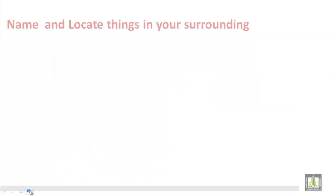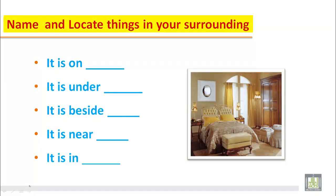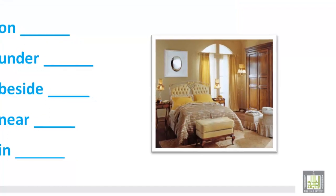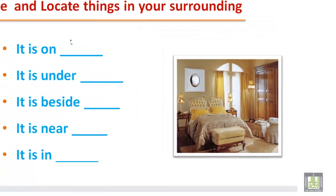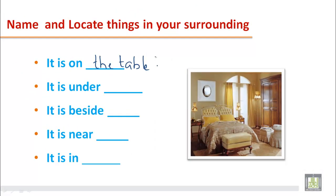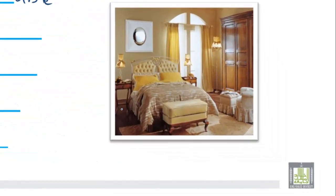And how do we describe the position of an object? We use prepositions to describe the position of an object. For example, this is a lamp — it is on the table.